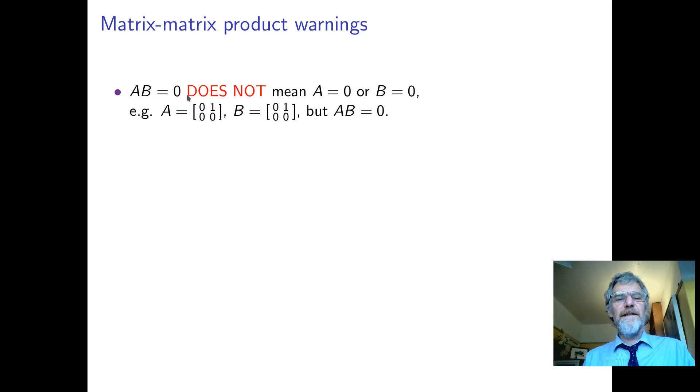AB equals zero doesn't mean that A or B equals zero. So some things are different from arithmetic. For example, if you get a matrix with lots of zeros in like this, and another one with zeros in a different place, it's possible to multiply them together to get zero, even though neither A nor B were zero.